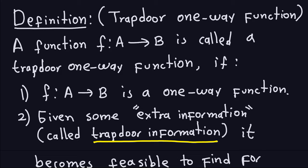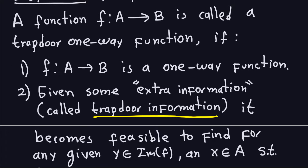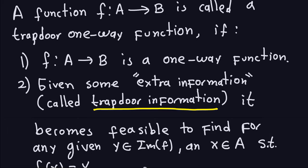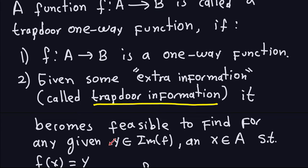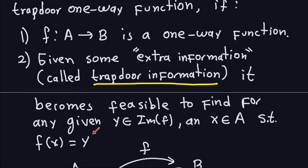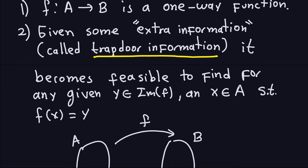And remember, the definition is that the inverse is not computationally feasible. But what is a trapdoor one-way function is, given some extra information called the trapdoor information, it becomes feasible to find for any given value in the image y, an x so that f(x) is equal to y.